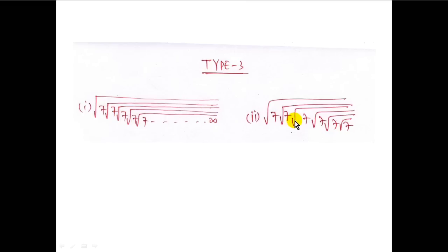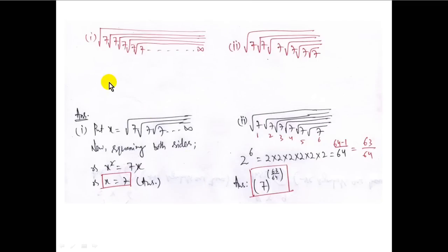Consider root over 7 up to infinity — an infinite nested square root. In this case, we put x equal to this total function, then square both sides: x squared equals 7x, so x equals 7, which is the required answer.